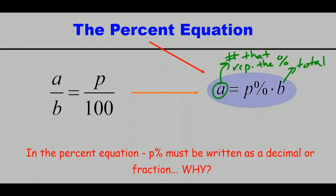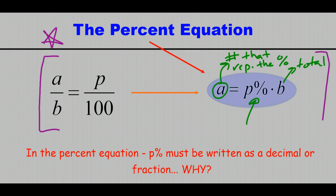The percent equation is: A equals P percent times B, where A is the part that represents the percent, and B is the total. Importantly, in the percent equation, P percent must be written as its decimal or fraction form. As you pause the video to write this down, also write a quick sentence or two about why you think P percent must be written as a decimal or fraction, and why we can't leave it as, say, 75% equals 75.